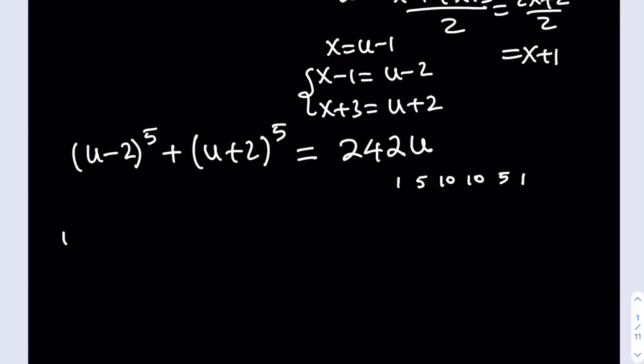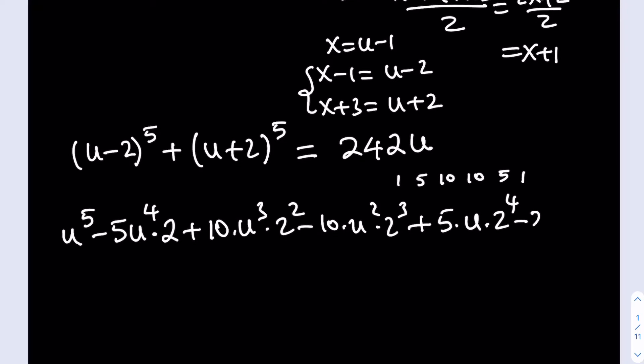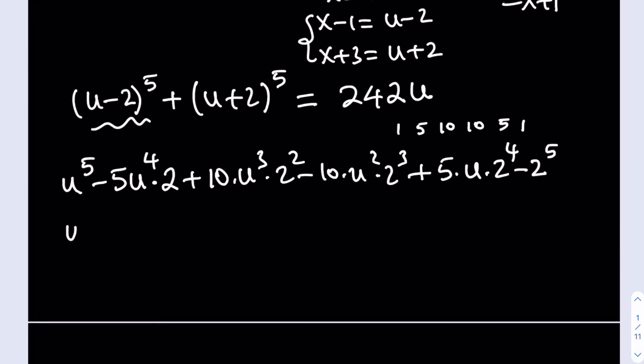Let's go ahead and expand the first term. (u-2)^5 is going to be u^5 - 5u^4(2) + 10u^3(2^2) - 10u^2(2^3) + 5u(2^4) - (2^5). So let's simplify this first because once you have that, the second one is going to be easier to write. u^5 - 10u^4 + 40u^3 - 80u^2 + 80u - 32. Now this is (u-2)^5.